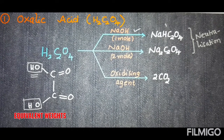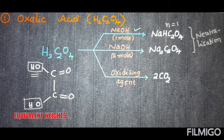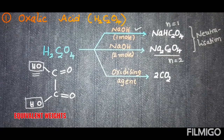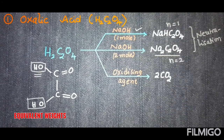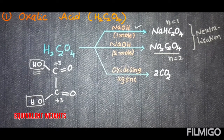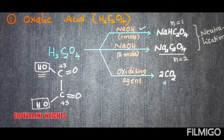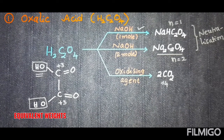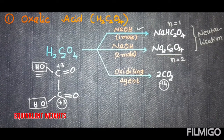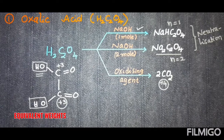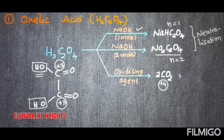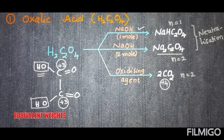In the first case, one hydrogen is replaced by sodium so the n-factor is one. In the second case, two hydrogens are replaced by sodium so the n-factor is two. In the redox reaction, the oxidation state of carbon in oxalic acid is +3, and in CO₂ it is +4 — so the change in oxidation number is one per carbon.